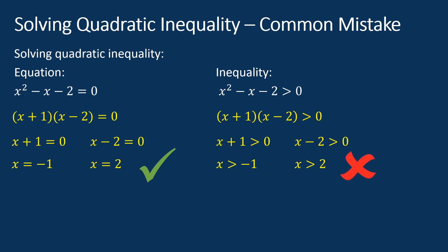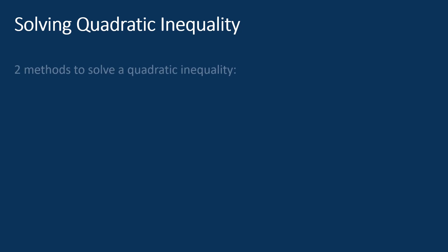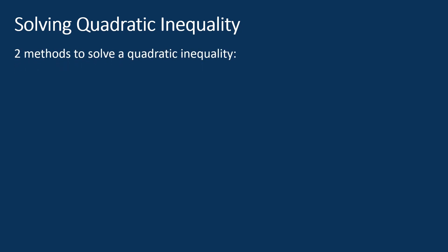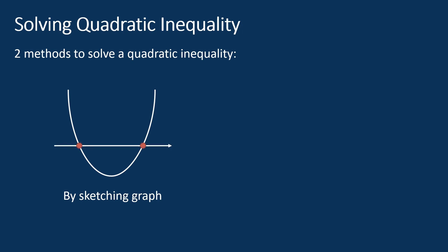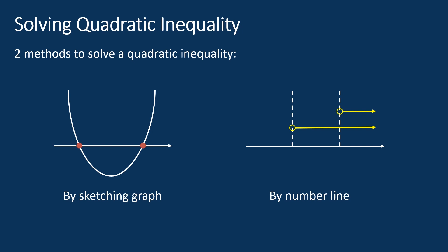We cannot solve a quadratic inequality as if it were a quadratic equation. There are two ways to solve a quadratic inequality. First, by sketching the graph of the related quadratic function, find the x-intercept, and then determine the solution from the graph. Second, by using a number line to determine the solution. In this video, we will discuss the first method: using a quadratic graph to find the solution of a quadratic inequality.